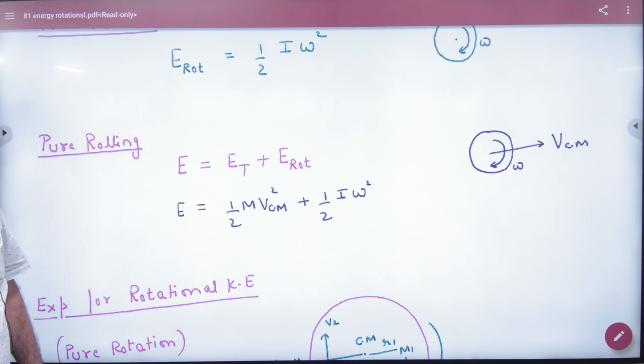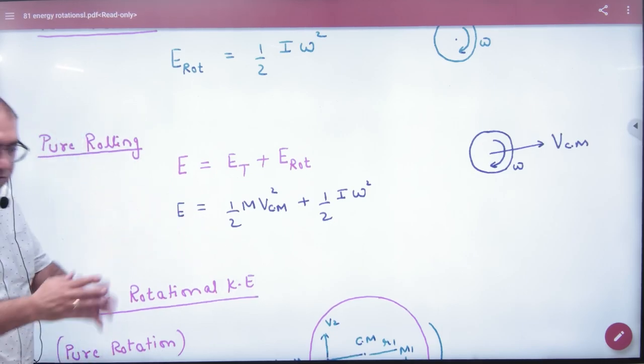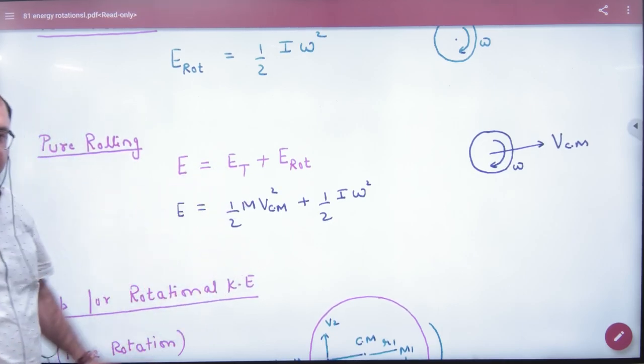So, you have to see this in your numerical question. What is it saying? Translation: half mv squared. Pure rotation: half I omega squared. Rolling: the sum. Do the sum.